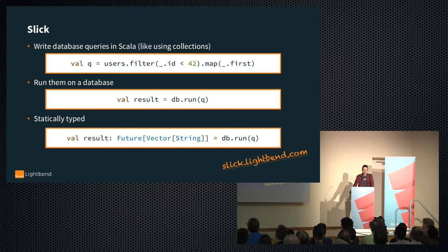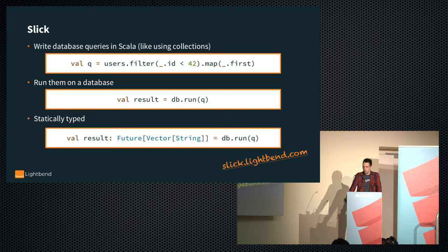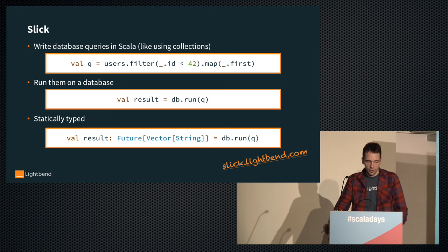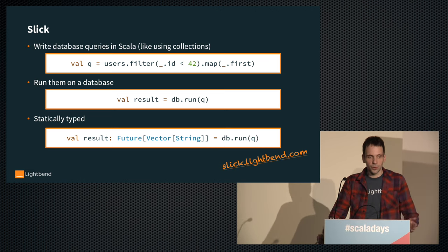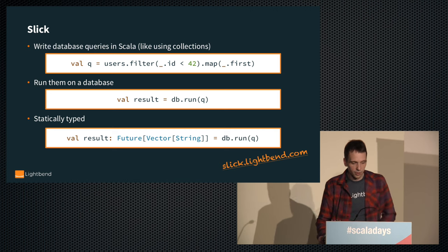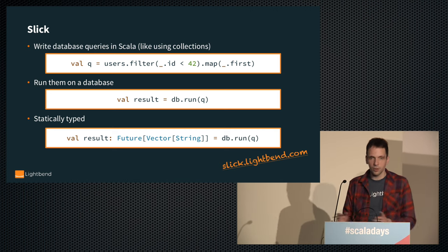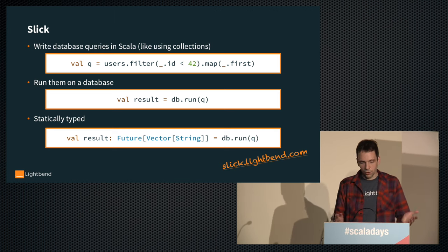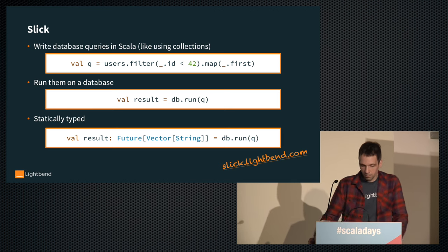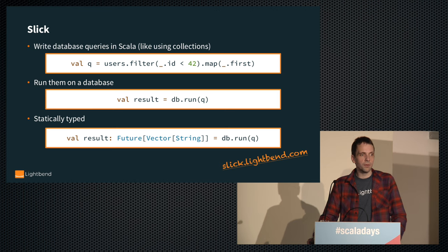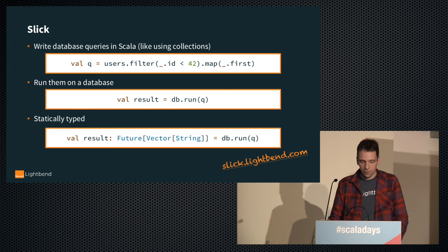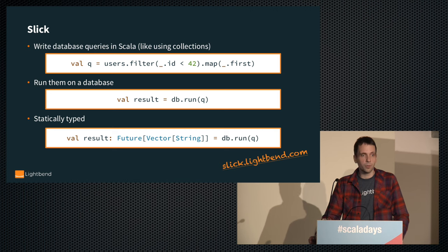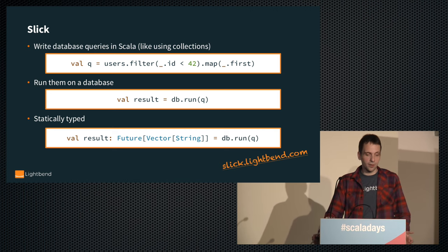The idea is that you write your database query like a Scala collection using the Scala collections API. Here we have a query: users table dot filter, some filter criteria, dot map, and we map to the first name of the user. The code looks the same as if you wrote it on a Scala collection. Then you run this on the database — you say db.run, give it your query, and you get a result back. The whole thing is statically typed, so the result in this case is a Future of Vector of String.